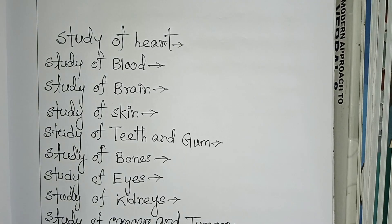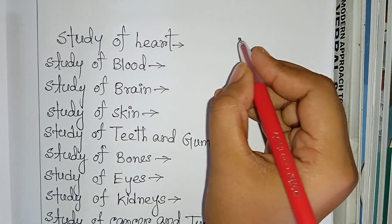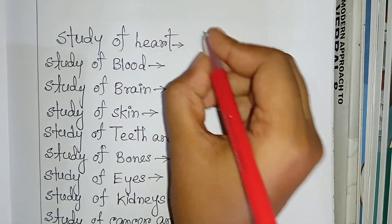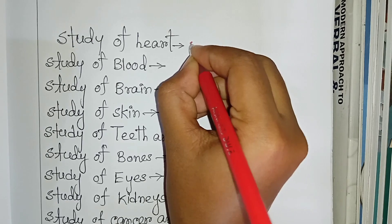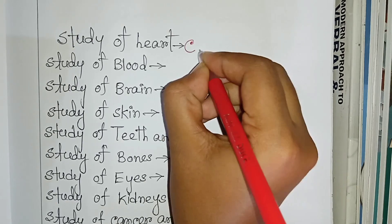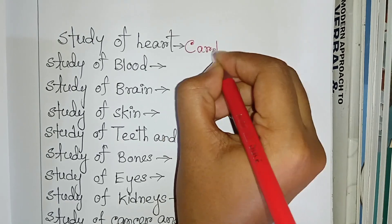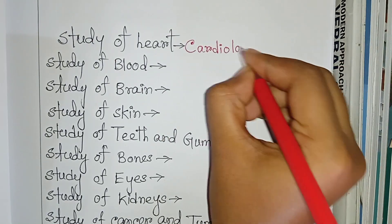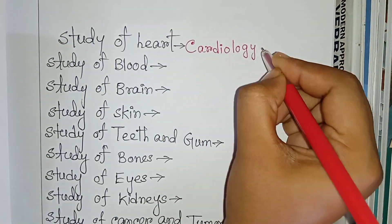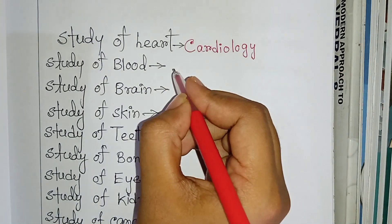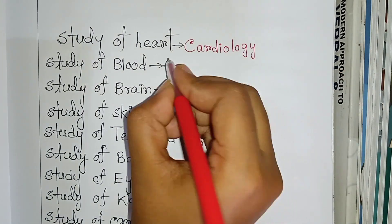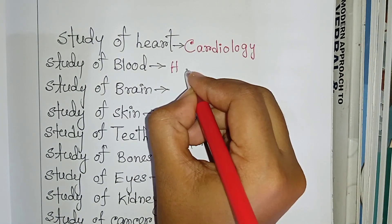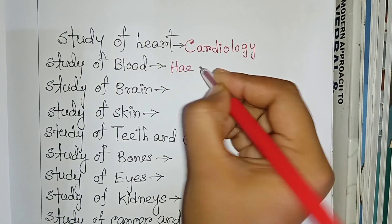Different types of studies and their names. Study of heart: cardiology. Study of blood: hematology.